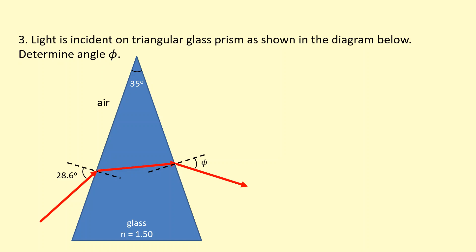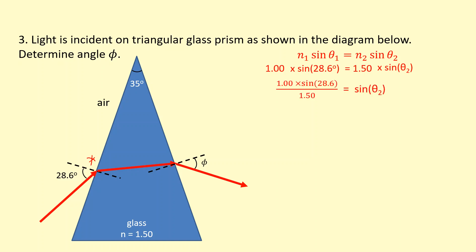Light is incident on a triangular glass prism as shown in the diagram. Determine the angle phi. Applying Snell's law at the first boundary: n1 is air, so 1, angle of incidence is 28.6 degrees, and n2 is glass with a refractive index of 1.50. Sine theta 2 is what we're trying to find. Rearranging and taking sine inverse, we get 18.62 degrees, so this angle inside the prism is 18.62 degrees.